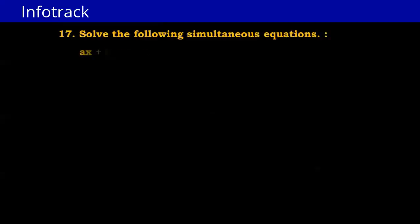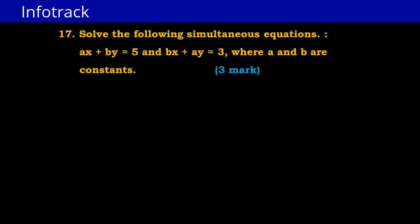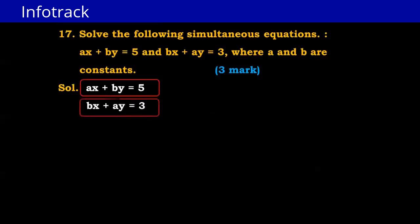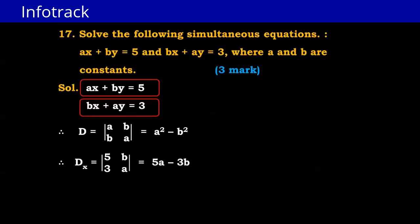Now solve: ax + by = 5 and bx + ay = 3, where a and b are constants. We write D with a1=a, b1=b, a2=b, b2=a. By cross multiplication: D = a×a − b×b = a² − b². For Dx: c1=5, b1=b, c2=3, b2=a. So Dx = 5a − 3b.